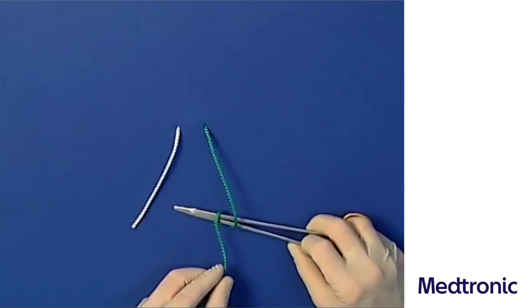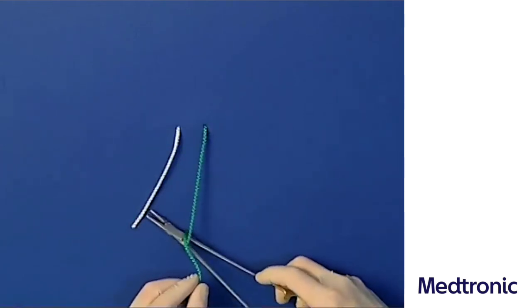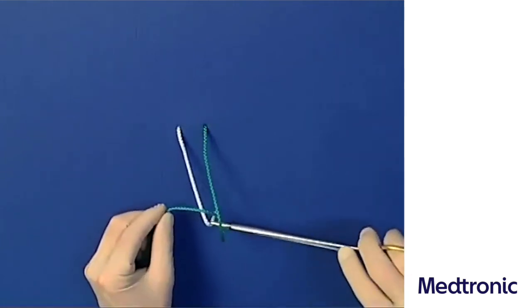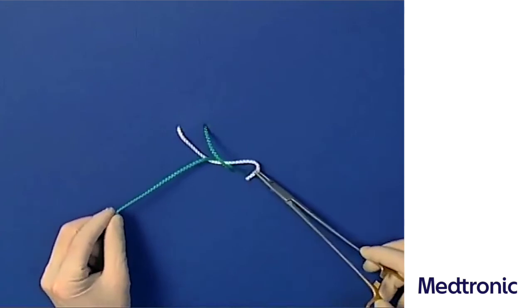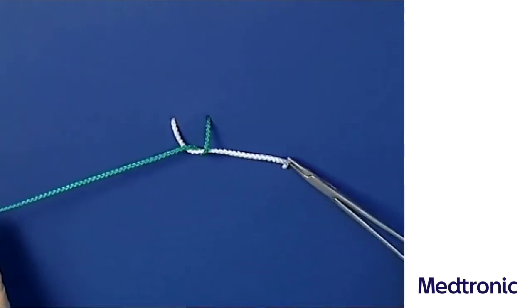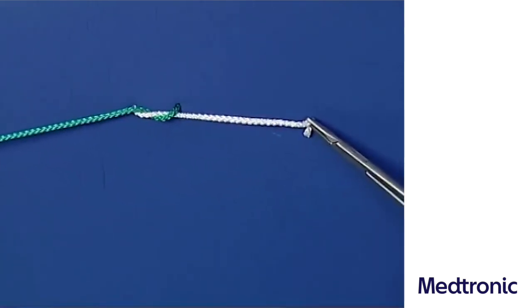The short suture end is grasped and pulled through the produced loop. By pulling the right long suture end to the left and the short suture end to the right, the first loop is completed.